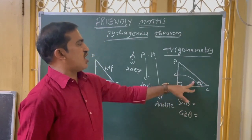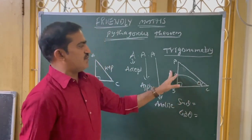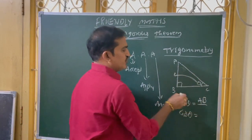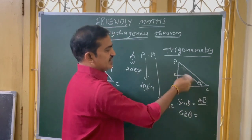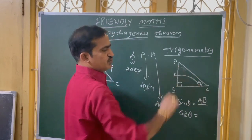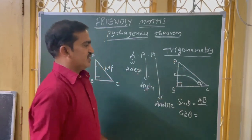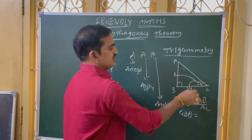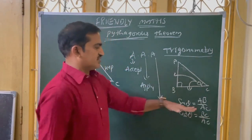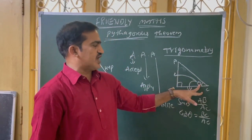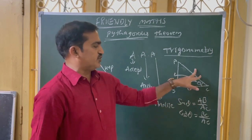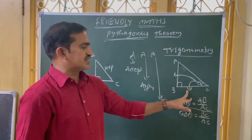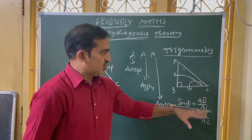Now, AB is the opposite side of theta. The ratio obtained by the opposite side to hypotenuse is nothing but sin theta. What is opposite to theta? AB. And hypotenuse is always fixed — we should not change it. The adjacent and opposite sides are going to change by the change in position of theta, but hypotenuse remains the same. It is always opposite to 90 degrees, so it is AC. And cos theta is adjacent divided by hypotenuse, which is BC by AC.